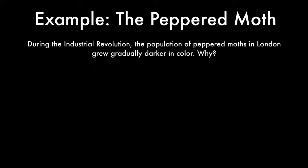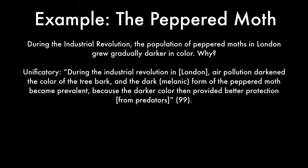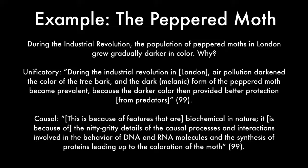Example three: the peppered moth. During the Industrial Revolution, the population of peppered moths in London grew gradually darker in color. A unificatory explanation: air pollution darkened the color of the tree bark, and the dark, melanic form of the peppered moth became prevalent because the darker color provided better protection from predators. Or a causal explanation can be given: this is because of features that are biochemical in nature — the nitty-gritty details of the causal processes and interactions involved in the behavior of DNA and RNA molecules and the synthesis of proteins leading up to the coloration of the moth.